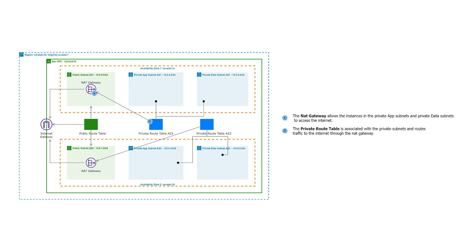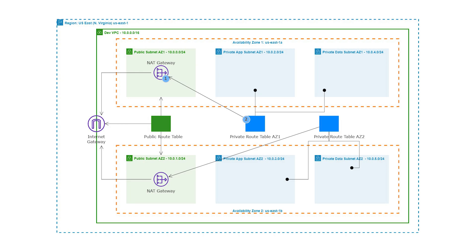Hello and welcome back to another lecture. In this lecture we are going to create a NAT gateway in the first and second availability zone using the following reference architecture. According to our reference architecture, we will create a NAT gateway in the public subnet AZ1. Then we will create a route table called private route table AZ1. Once created, we will add a route to route traffic to the internet through the NAT gateway, then associate that route table with the private app subnet AZ1 and private data subnet AZ1.